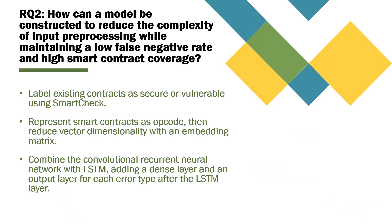This brings us to our second research question: how can a model be constructed to reduce the complexity of input preprocessing while maintaining a low false negative rate and high smart contract code coverage? We take a very similar approach to multi-objective detection neural networks and long short-term memory here. First, we build our dataset by labeling existing contracts as either secure or vulnerable using SmartCheck. SmartCheck is a tool that allows us to quickly write grammar rules in a declarative language that the contract is then evaluated for. This makes it relatively quick to evaluate a smart contract for different types of vulnerabilities while also maintaining full coverage. Once we've obtained a set of secure and a set of vulnerable contracts, we can then convert them to opcode and vectorize them using an embedding matrix, to reduce the vector dimensionality and ensure that all of our inputs are the same length.